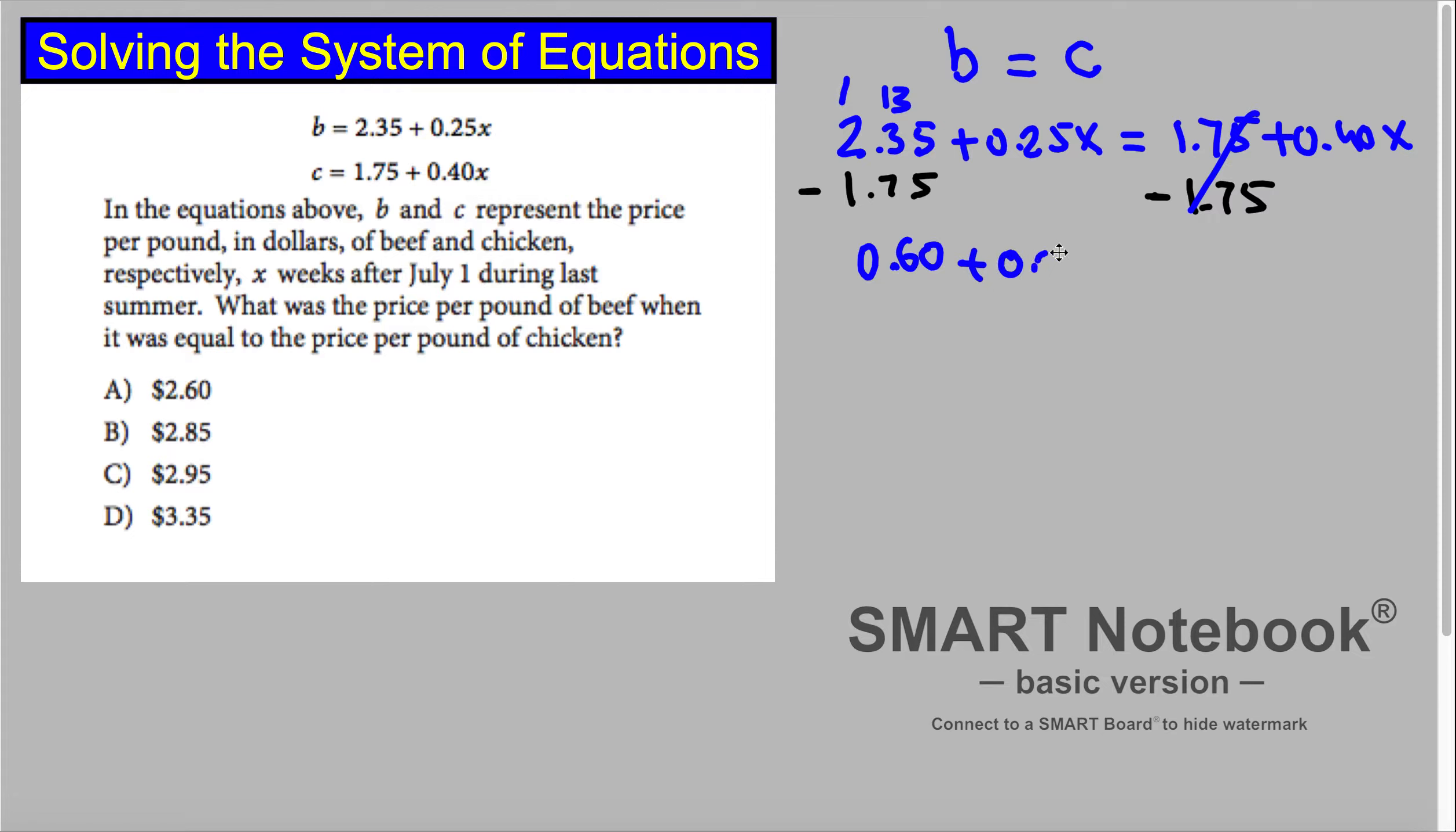Plus 0.25x is equal to 0.40x. Both sides of the equation we are subtracting by minus 0.25x.